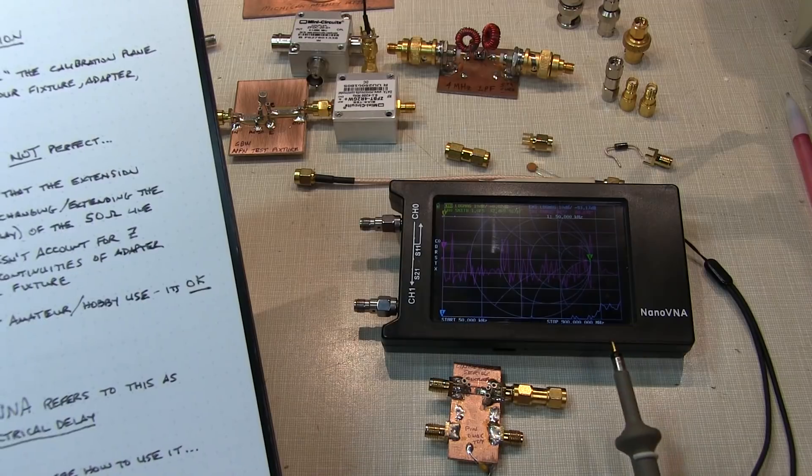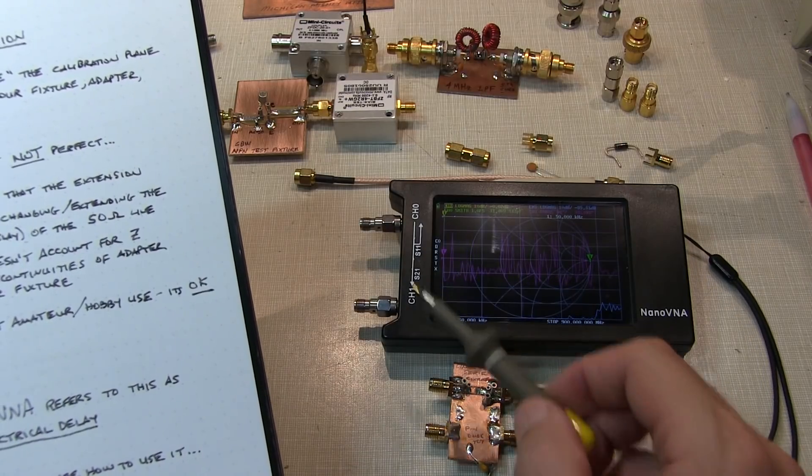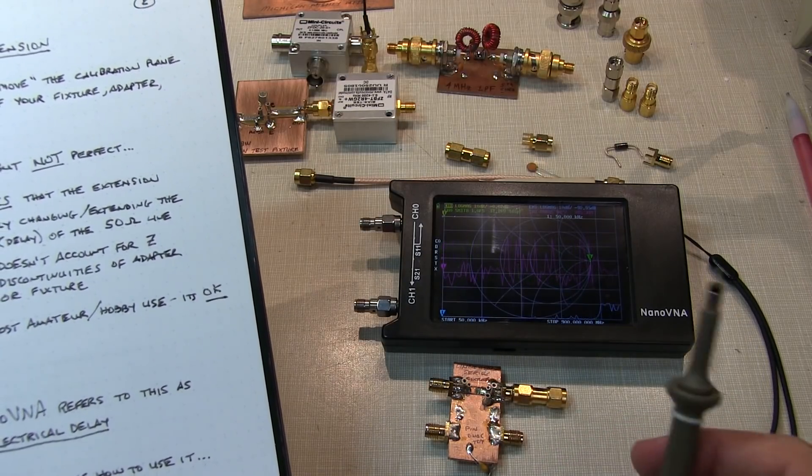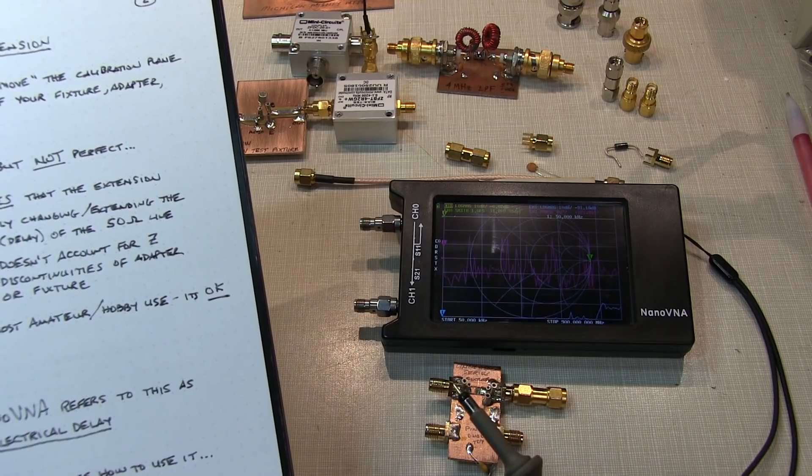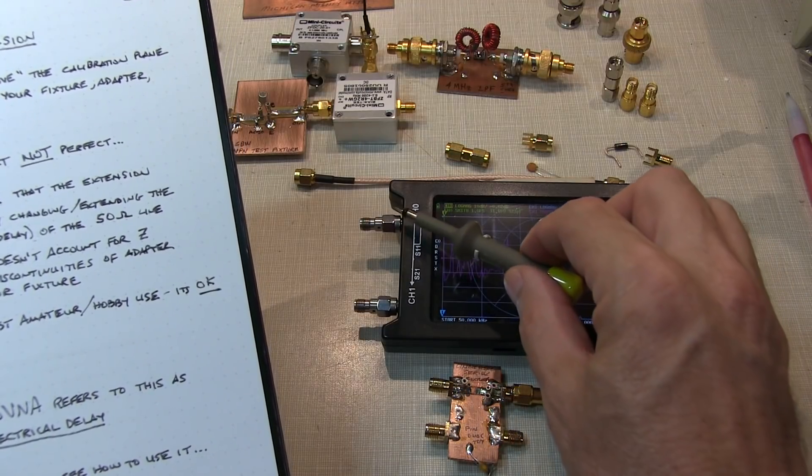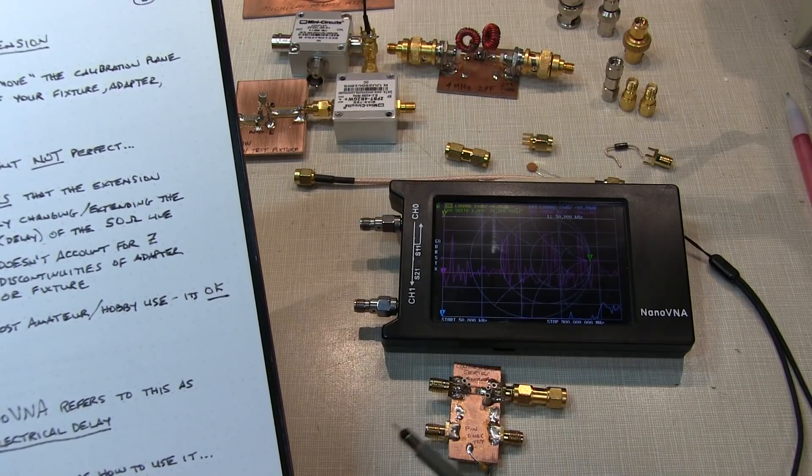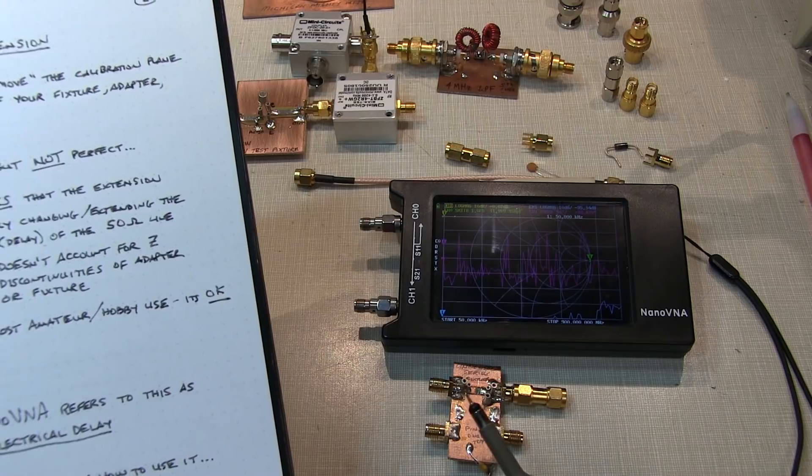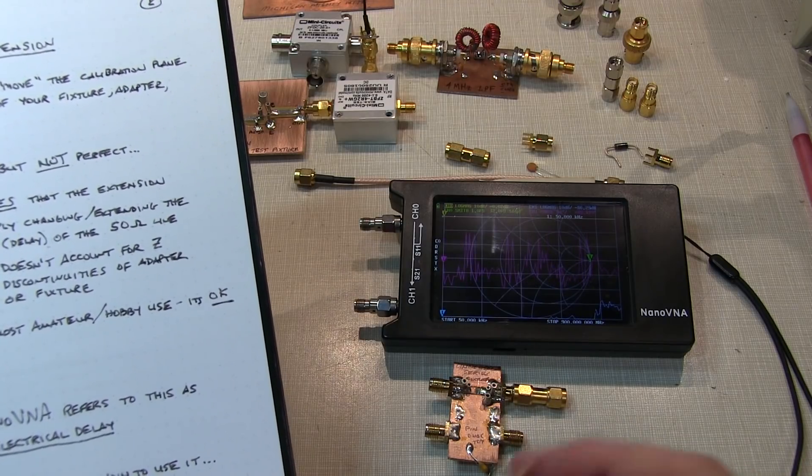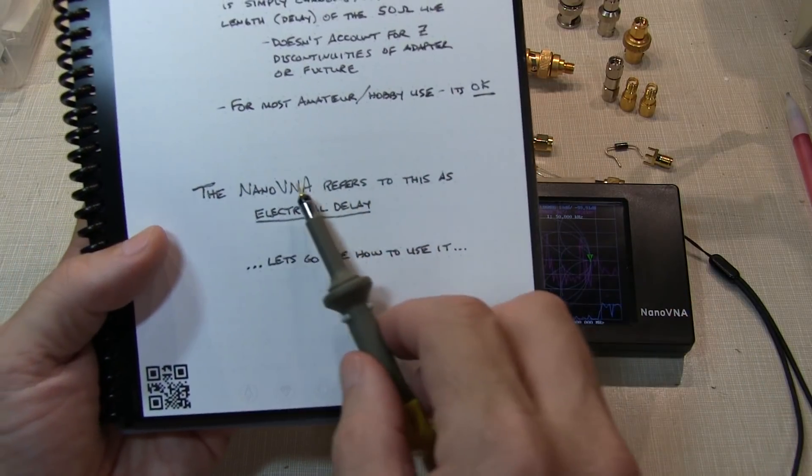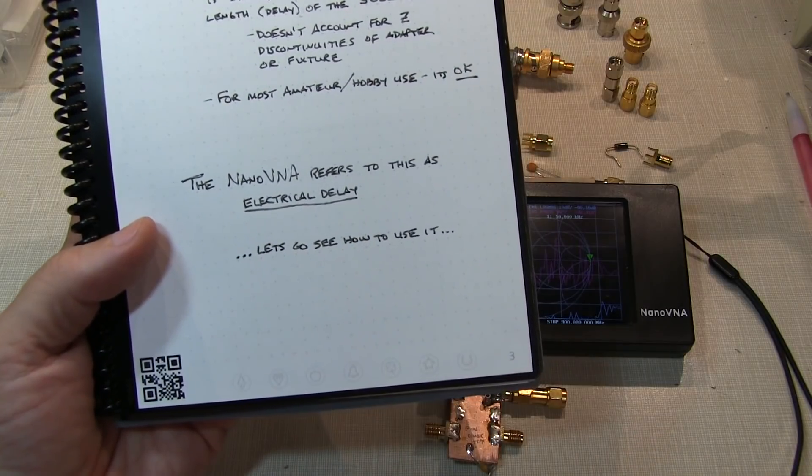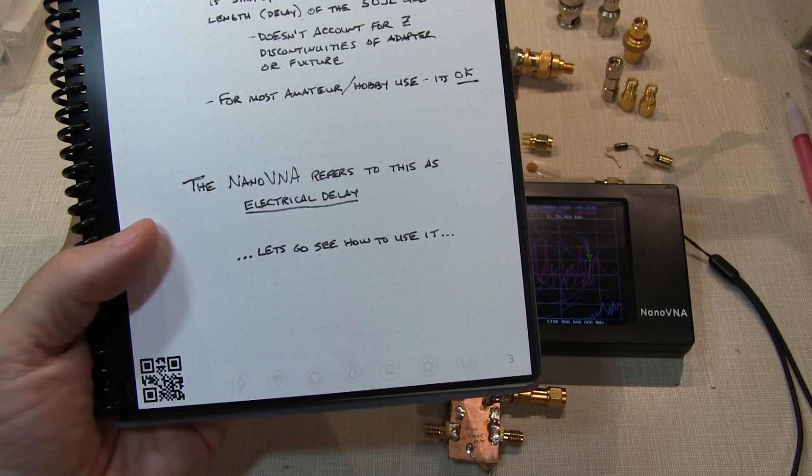One issue with some of the nano VNAs is that they don't use the same terminology that the RF industry uses for VNAs. For example, this would normally be called port 1 and port 2. The nano VNA calls it channel 0 and channel 1. And of course, the nano VNA doesn't call port extensions port extensions. The nano VNA refers to this as electrical delay. So, let's go see how to use that.